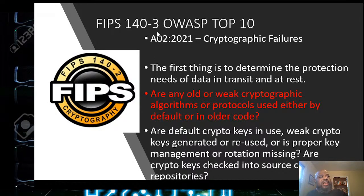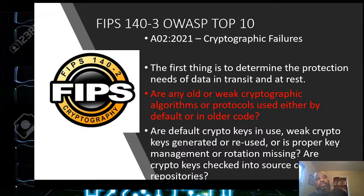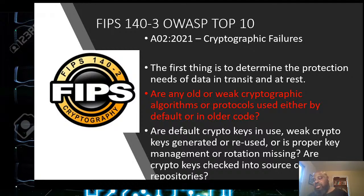FIPS 140-3 is one of OWASP's top 10 items for cryptography. The first thing is to determine the protection needs for data in transit and data at rest. Any old or weak cryptographic algorithms or protocols — whether used by default or in older code — are findings. You need to avoid weak or default crypto keys, ensure proper key generation, and ensure proper key management and rotation. This is checking what ciphers you use and whether any of them are old. Upcoming slides will show how to scan your system to find out if you're using old ciphers.